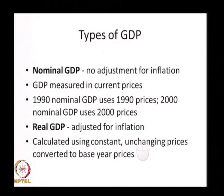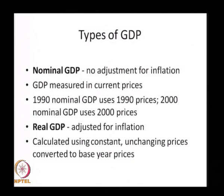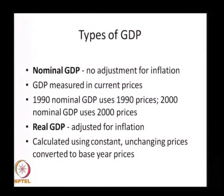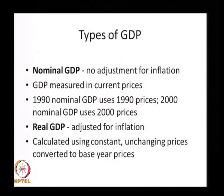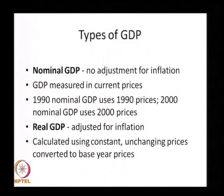While calculating the GDP of a country, we need to keep in mind different terminologies. You will see a newspaper reporting nominal GDP and real GDP. A nominal GDP is one that does not adjust for inflation — it just measures at a certain price level. In 1990, the nominal GDP uses 1990 prices; in 2000, the nominal GDP uses 2000 prices. It does not adjust for inflation, whereas in a real GDP the adjustment for inflation is made.